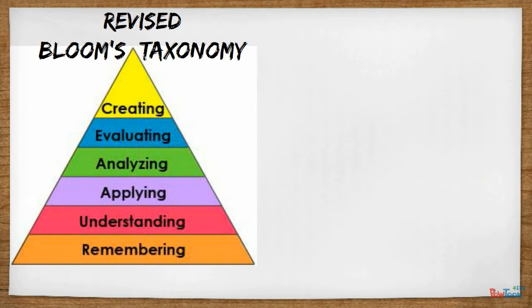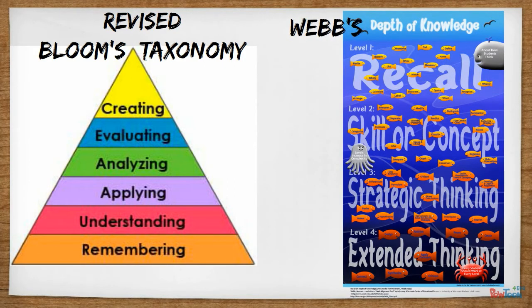The first of these is Revised Bloom's Taxonomy, also known as RBT. The structure of RBT is meant to provide a scale to measure thought processes from lower order to higher order brain functions. The second critical thinking structure is Webb's Depth of Knowledge, which lays out four different levels to measure the complexity of thought necessary to complete tasks at each level.